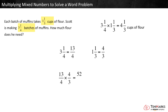Multiply across. Thirteen times four equals fifty-two. Four times three equals twelve. There are four whole groups of twelve in fifty-two, with four-twelfths left over. So fifty-two-twelfths as a mixed number is four and four-twelfths. Four-twelfths is equivalent to one-third, so we do get a product of four and one-third cups, just like the model. Our answer is correct.